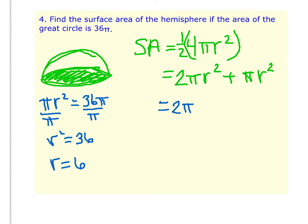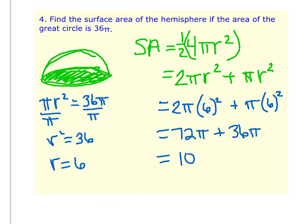Oops, I meant to put in a 6 there. 2 pi times 6 squared plus pi times 6 squared. We get 2 times 36, which is 72 pi plus 36 pi. And when you add those two together, you get 108 pi. And this one doesn't have units, so we'll just say square units.